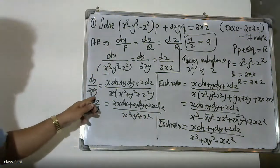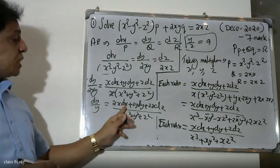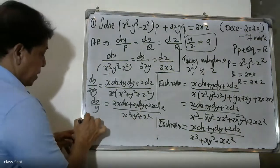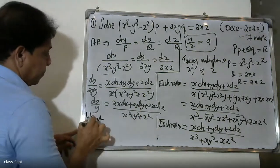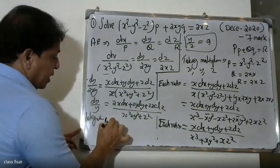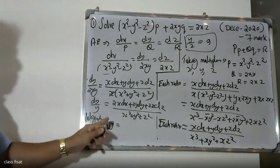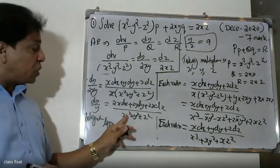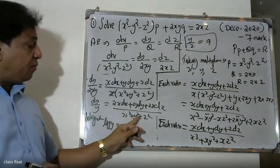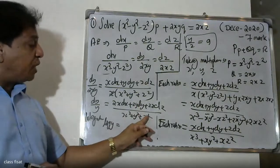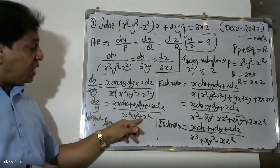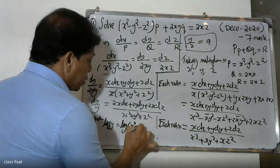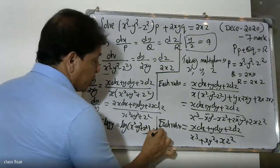After cancellation, we get dy/y on the left-hand side equals (2x dx + 2y dy + 2z dz) divided by (x² + y² + z²) on the right-hand side. The denominator x² + y² + z² has derivative 2x dx + 2y dy + 2z dz, so the numerator is the derivative of the denominator. Integrating gives log(x² + y² + z²) plus a constant.